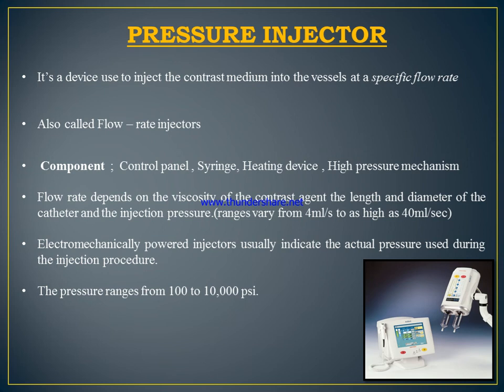A pressure injector is an electrical mechanical device used to inject contrast medium into vessels at a specific flow rate, also called a flow rate injector. Its components include a control panel, syringe, heating device, and high-pressure mechanism. Flow rate depends on the viscosity of the contrast agent, and the length and diameter of the catheter. Electromechanically powered injectors indicate actual pressure used during injection, typically 100 to 10,000 PSI.